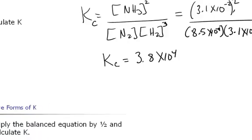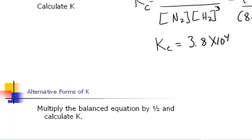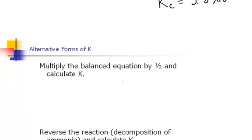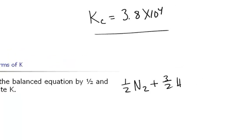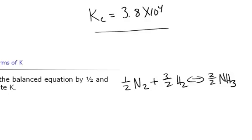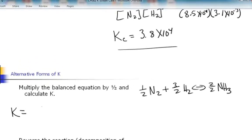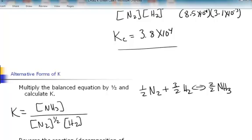Now let's say somebody else balanced this equation differently and multiplied through by one-half. The equation becomes: one-half moles of N₂ plus three-halves moles of H₂ in equilibrium with one mole of ammonia. The equilibrium expression for KC prime is the concentration of NH₃ raised to the first power, divided by the concentration of N₂ raised to the one-half power, times the concentration of H₂ raised to the three-halves power. We call this KC prime because the equation has changed.